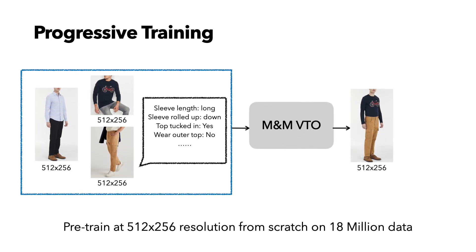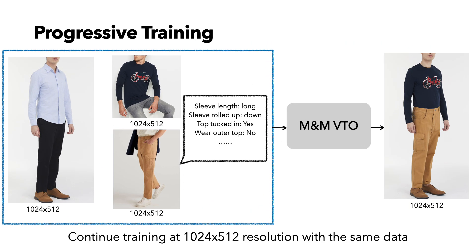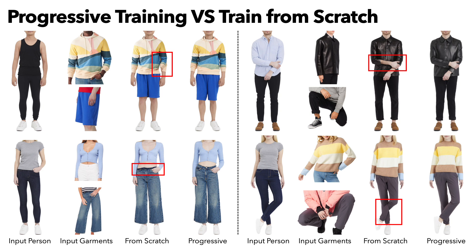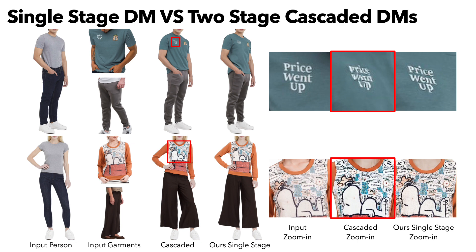To solve this issue, we propose a progressive training strategy. In the first stage, we pre-train our model from scratch on 18 million data at a lower resolution, 512 by 256. This stage focuses on learning low- and mid-level structures and warping. Then we continue to train the exact same model with the same data but at a higher resolution, 1024 by 512. This stage mainly focuses on high-frequency details. Thanks to the pre-training in the first stage, now the cross-attention at higher resolution is much easier to converge. I show some ablated results of progressive training versus directly training the model at the highest resolution without the lower resolution pre-training. Progressive training does not suffer from mid-level warping and structure errors. Here is another ablation study for our progressively trained single-stage diffusion model versus the two-stage cascaded diffusion models — we can see the small tags and logos are better preserved.